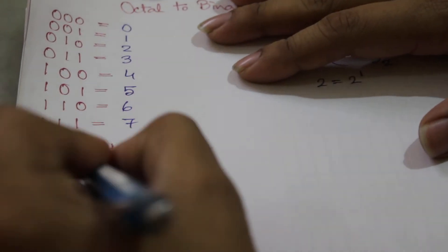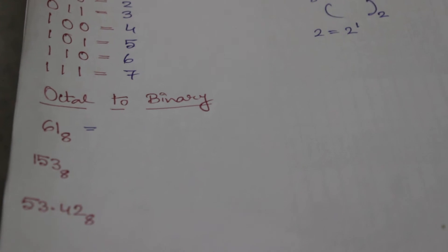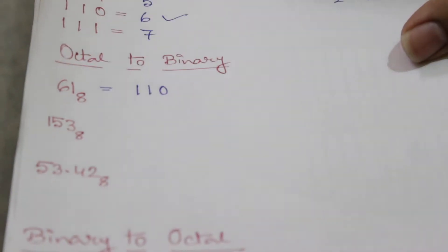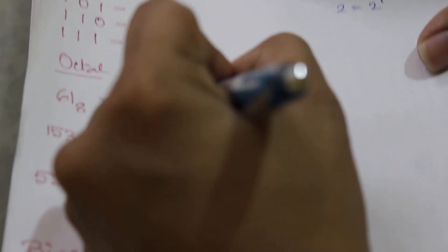Now let's take one example like 61. We have to convert it to binary number. Six is this one one one zero, so we will write one one zero first. And one is this zero zero one, so we will write zero zero one. So this is the binary equivalent of this number.